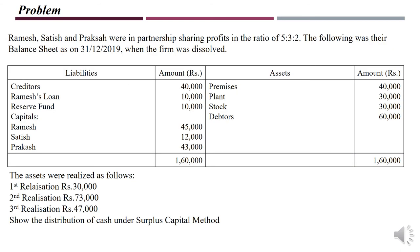Now let us work the second problem. Ramesh, Satish, and Prakash were in partnership sharing profits in the ratio 5:3:2. The balance sheet shows a reserve fund of 10,000 — this must be distributed among partners in their profit sharing ratio before preparing the surplus capital table. Realization stages: first stage 30,000; second stage 73,000; third stage 47,000.